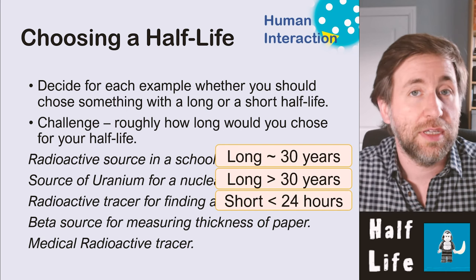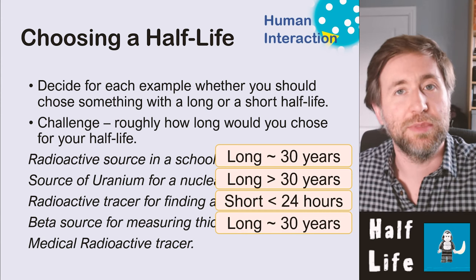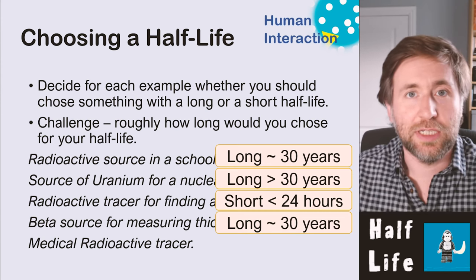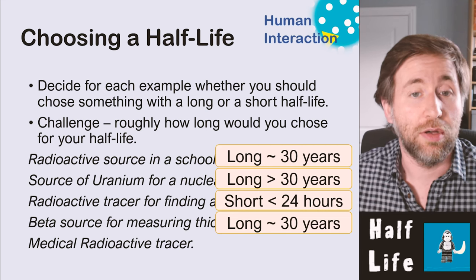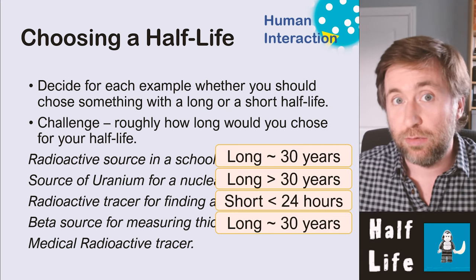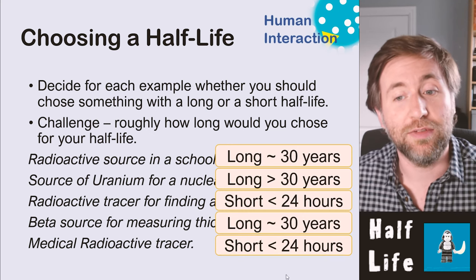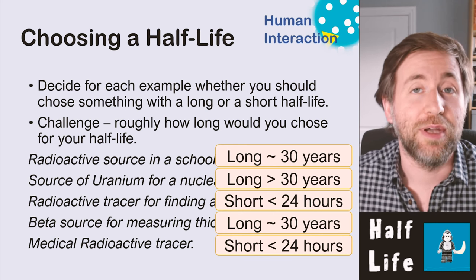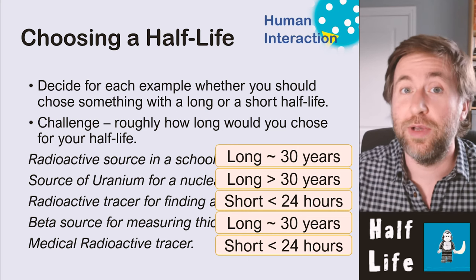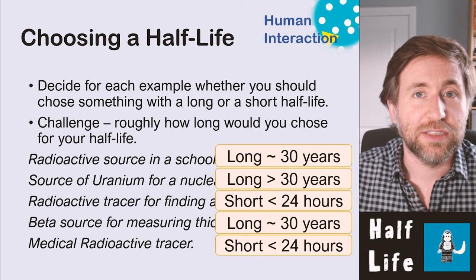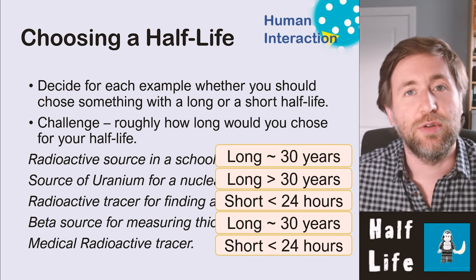A beta source for measuring paper thickness needs a long half-life — you want to install it and expect it to still be working the same in 10, 20, or 30 years. A medical radioactive tracer, where you inject a patient and detect gamma rays outside their body, needs a short half-life — but not so short there's no time to measure. You want it to be less than 24 hours so the patient isn't sent home still radioactive.